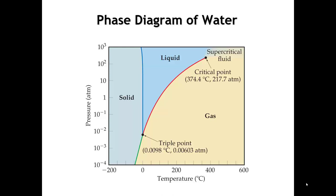Let's look at a very familiar phase diagram to any chemist — the phase diagram of water. We can apply the Gibbs phase rule in the following way. Here we have a one-component system; water is the only component present. So applying the Gibbs phase rule, C equals 1 plus 2, so that's 3, minus the number of phases equals the degrees of freedom.